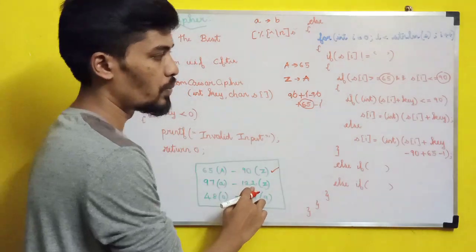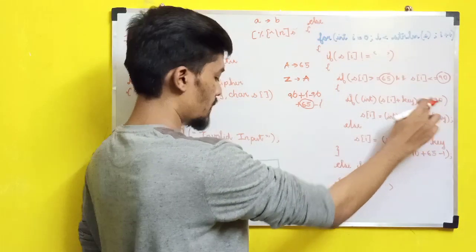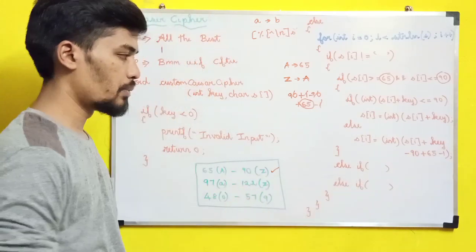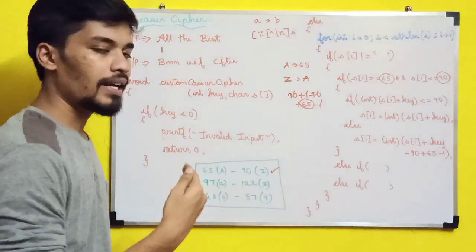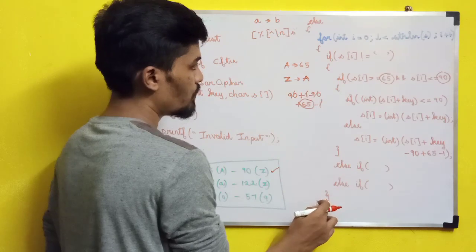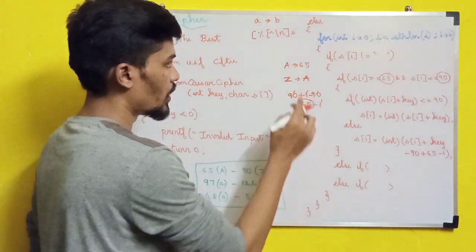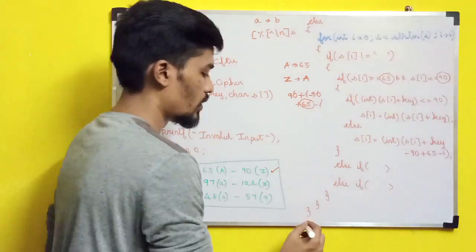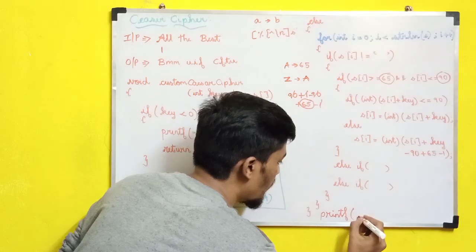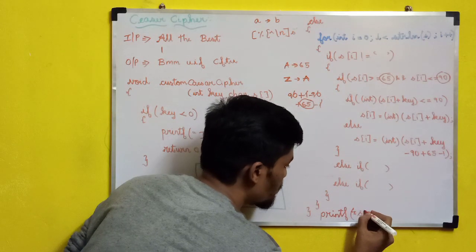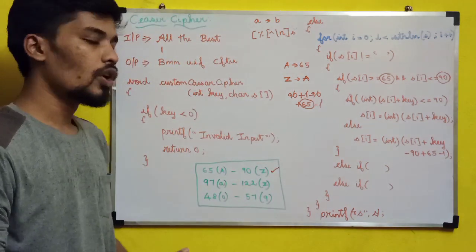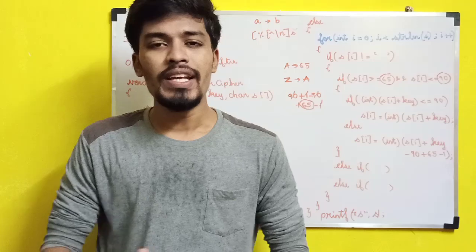For lowercase, substitute 97 and 122 in place of 65 and 90 respectively in the wrap-around formula. For digits, use 48 and 57. So that covers lowercase and digits. We also have to print the final result. That's the complete Caesar cipher logic.